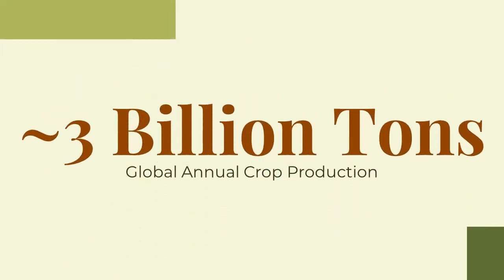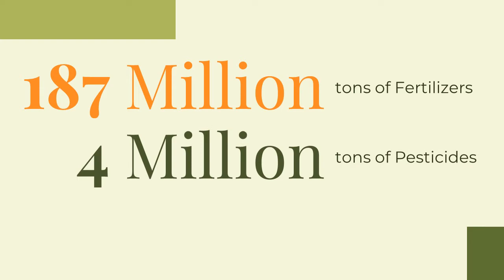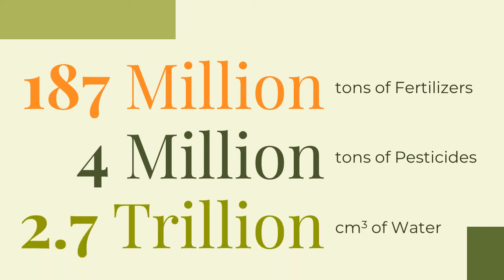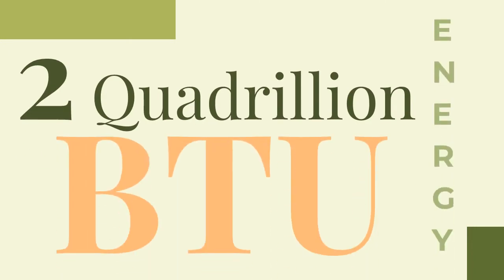Present agriculture uses a staggering amount of resources. For instance, the global annual crop production exceeds 3 billion tons. This enormous amount of crop production requires 187 million tons of fertilizer, 4 million tons of pesticides, 2.7 trillion cubic meters of water — which is about 70% of all freshwater consumptive use globally — and over 2 quadrillion British thermal units of energy.